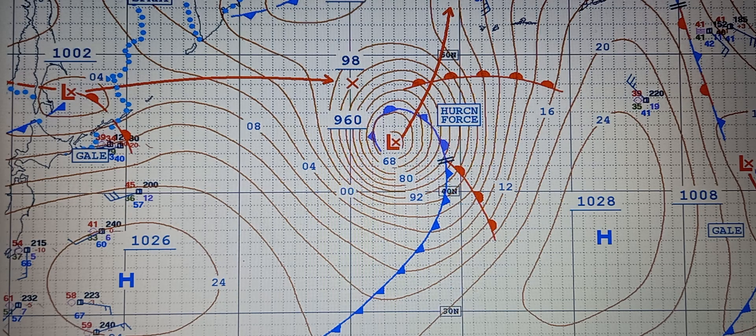Let's begin with a cold front. On weather maps, it's a solid blue line with triangular spikes pointing in the direction of the front's movement.